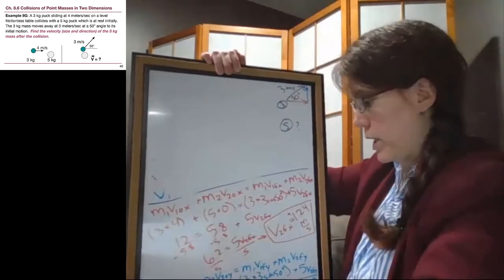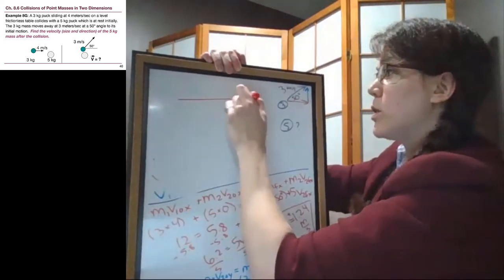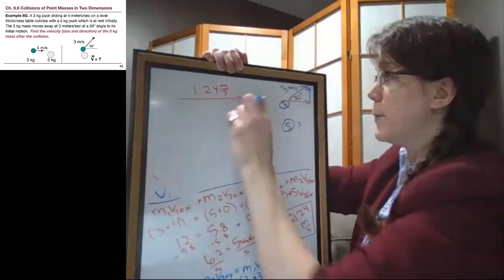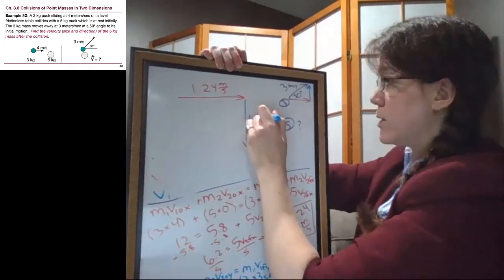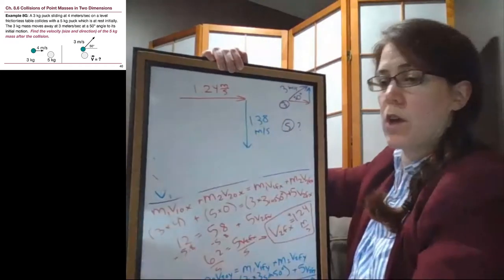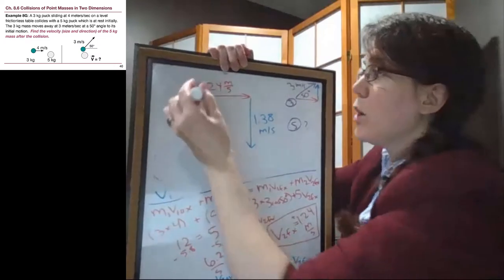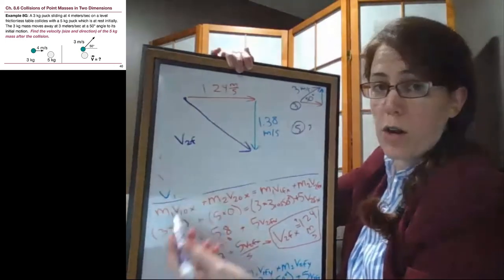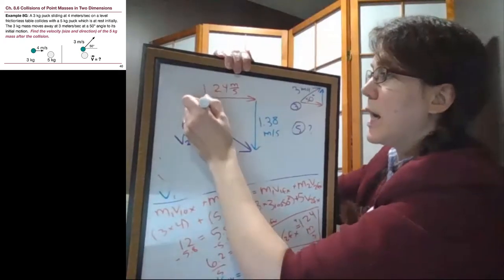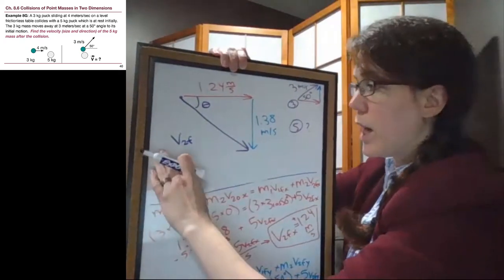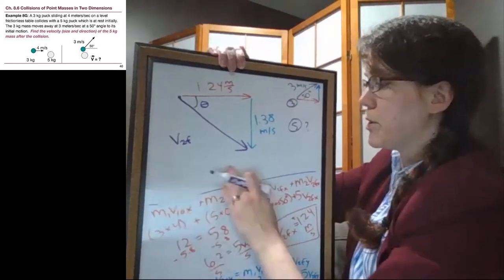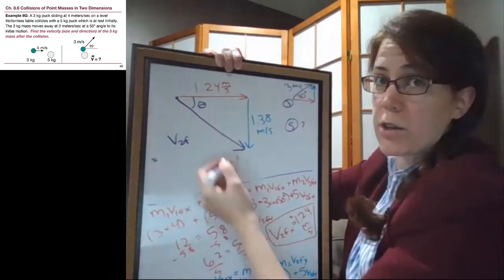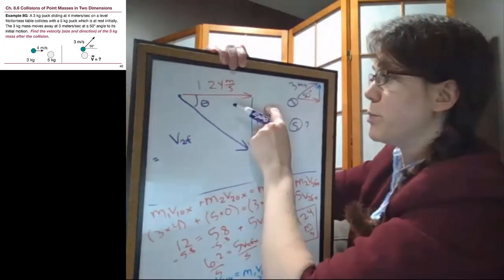But what we have now is that we know that this 5 kilogram block is moving with 1.24 meters per second of motion to the right and 1.38 meters per second of motion downwards. So I won't put the negative sign because that's what the arrow is indicating. So what we need to finish this problem is this v2 final overall motion, the size of the velocity, and we need this angle. So now we're relying on that understanding that we have from chapter 3 and beyond of trigonometry. For this long hypotenuse side, we're using Pythagorean theorem, a squared plus b squared equals c squared.